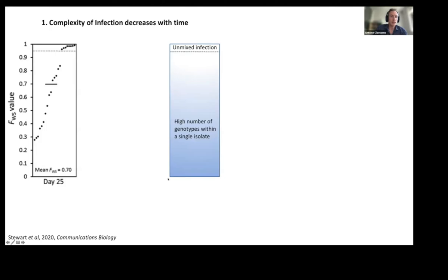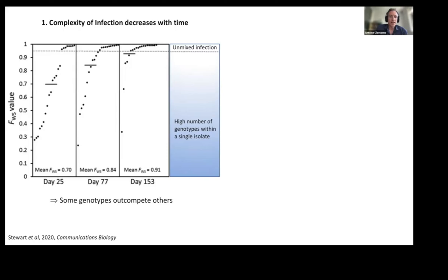First, using the whole genome sequencing data, we measured the FWS value — a metric calculated from the genetic diversity of an isolate. A value of one indicates a monoclonal or single-genotype infection, while a lower value indicates a higher number of genotypes or clones within an isolate. With time in culture, the genetic diversity in most isolates is reduced, indicating that some genotypes out-compete others.